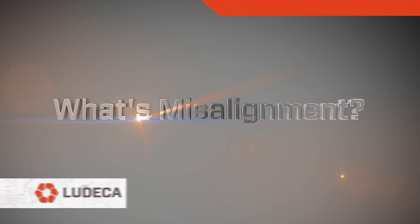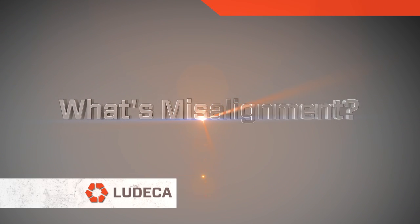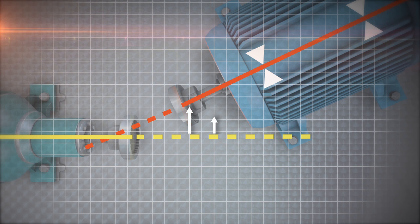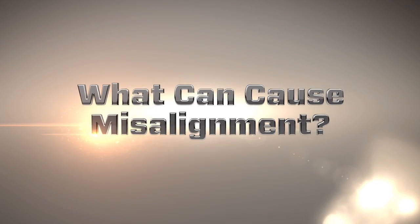What is misalignment? Misalignment means you have too much offset and angularity between two shaft center lines of rotation.